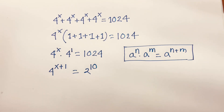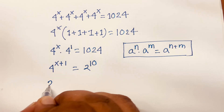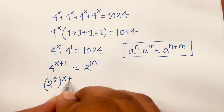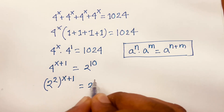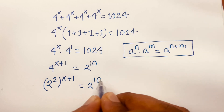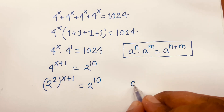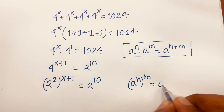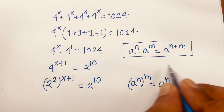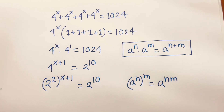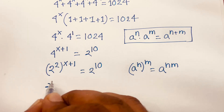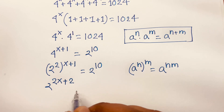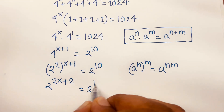We rewrite 4 as 2 to the power 2, so we have 2 to the power 2, bracket to the power x plus 1, equals 2 to the power 10. Using the rule that a to the power n, bracket power m, equals a to the power n times m, this becomes 2 to the power 2x plus 2, equals 2 to the power 10.